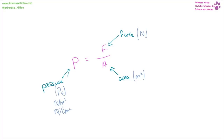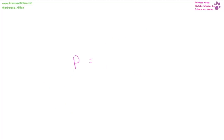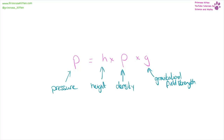This is one you have to pay attention to because they could be sneaky. Pressure equals height times density (lowercase rho) times gravitational field strength. Pressure is measured in pascals, height in metres, density in kilograms per metre cubed, and gravitational field strength is 9.8 newtons per kilogram.